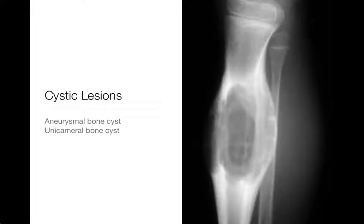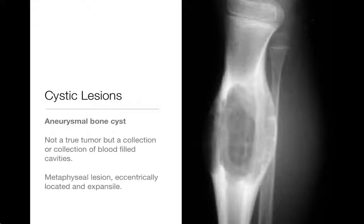Next up, we'll talk about cystic lesions of the bone. The two we'll talk about are aneurysmal bone cysts and unicameral bone cysts. Aneurysmal bone cysts are not really a true tumor. These can be acquired, for example after trauma, or grow within another tumor. All they really are are collections of blood — blood-filled cavities — which slowly expand over time.